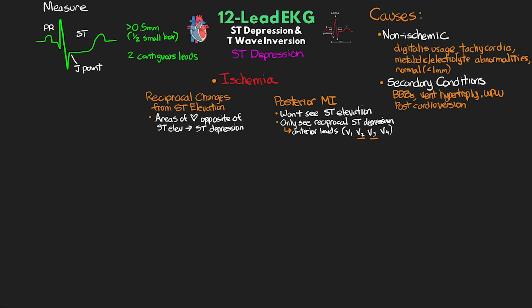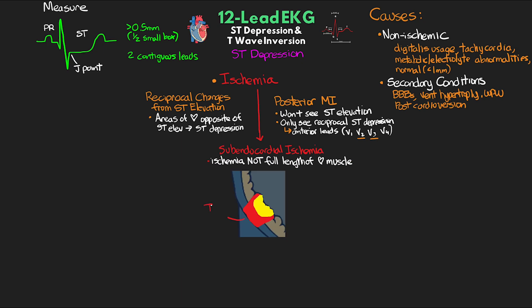Having this present and persistent on serial EKGs or continuous monitoring is going to be indicative of a posterior STEMI, and this would warrant a posterior view EKG. When discussing ST depression in the context of ischemia, this ischemia is called subendocardial ischemia, meaning the ischemia does not go the full length of the cardiac muscle — something we call transmural ischemia. The ischemia is usually just present towards the endocardium, hence the name subendocardial ischemia.